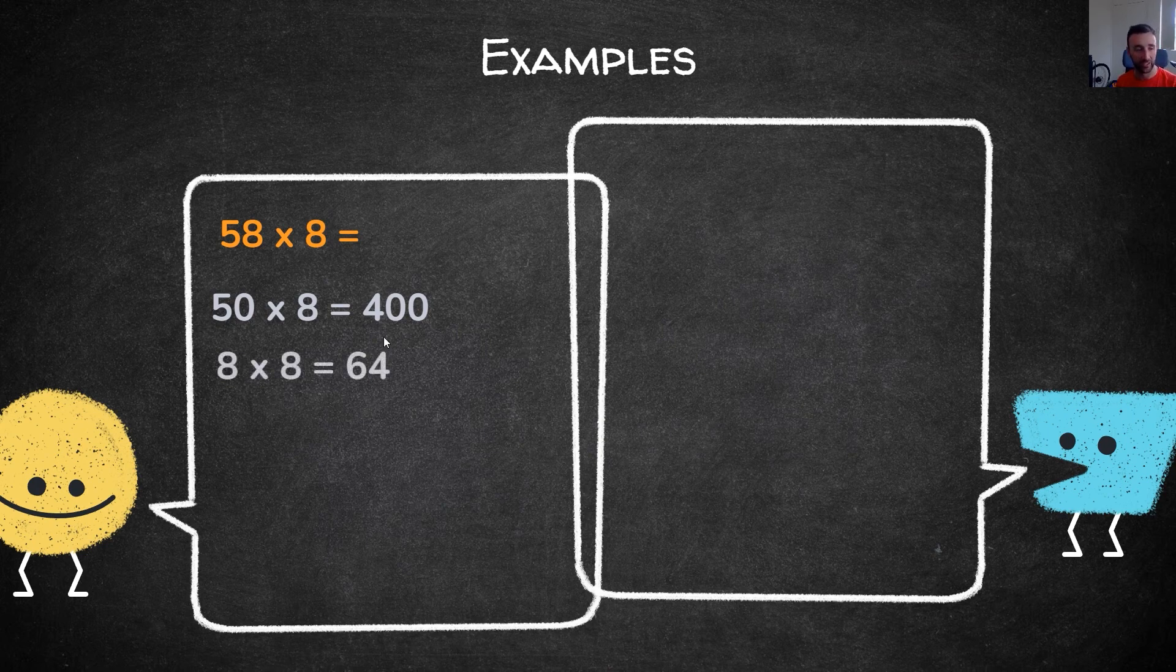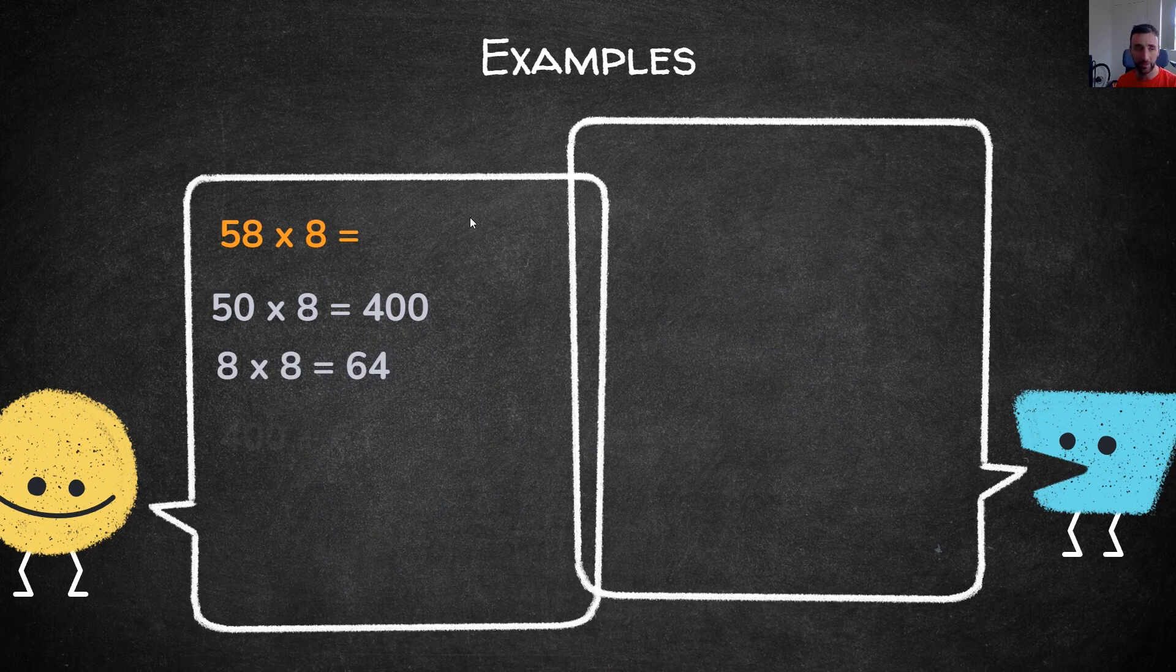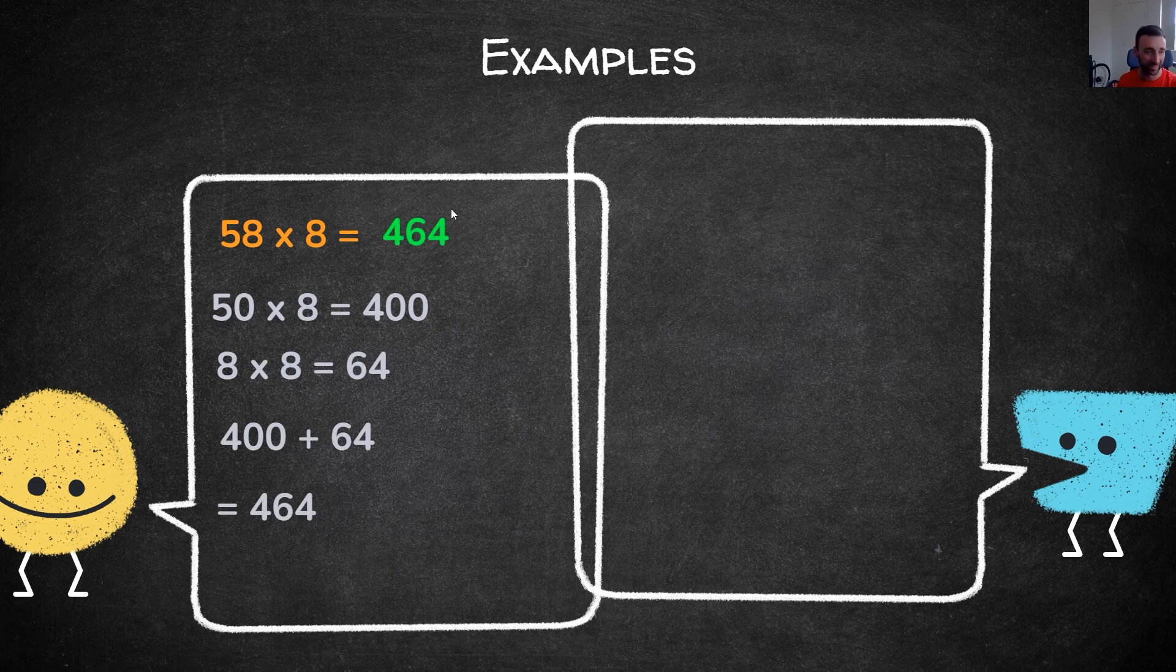Then all you have to do with partitioning is add these two numbers together, 400 plus 64, which gives us 464 as our correct answer.